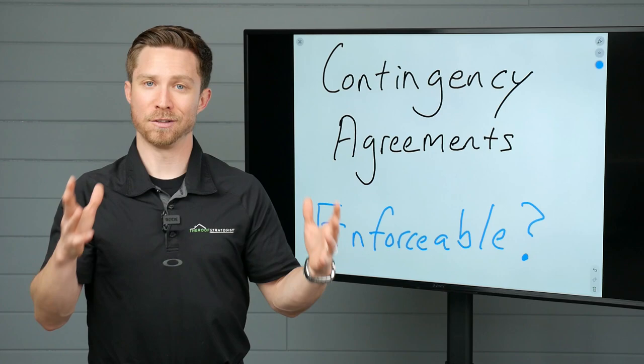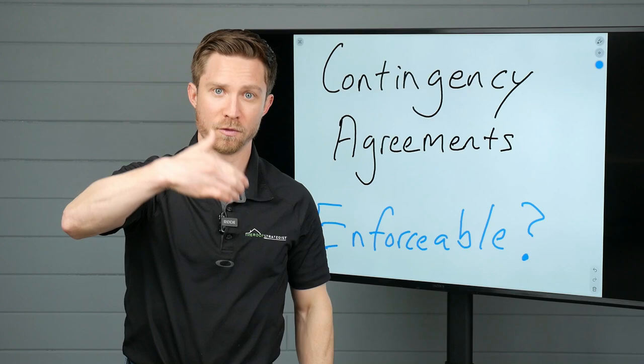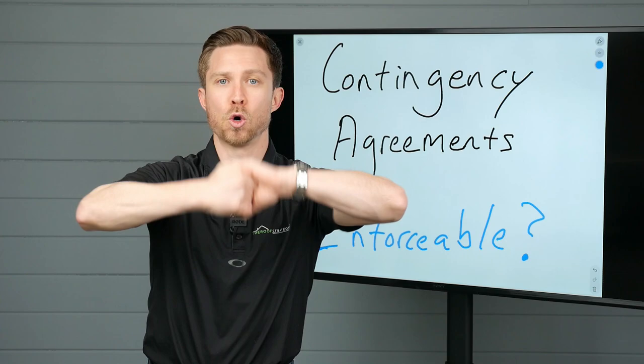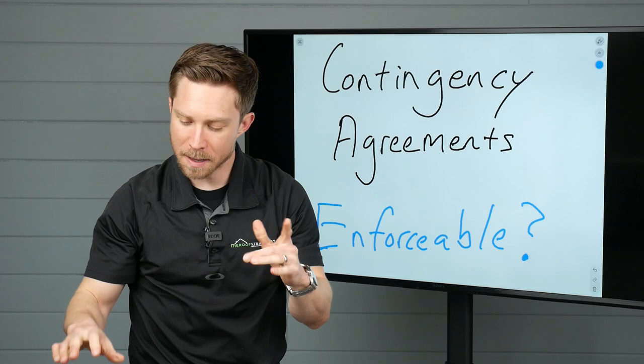So what is a contingency agreement? A contingency agreement is essentially a glorified handshake that says we're going to get your roof approved or help you get it approved by the insurance and if it is, we get to do the work. Cool? Great. That's the contingency agreement.